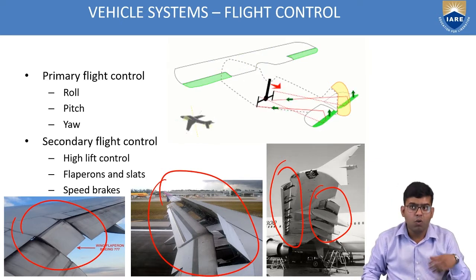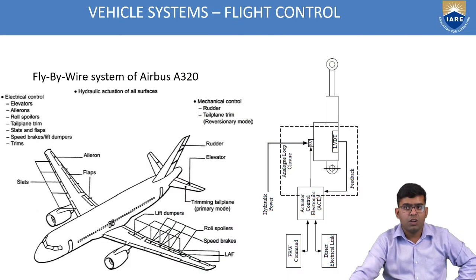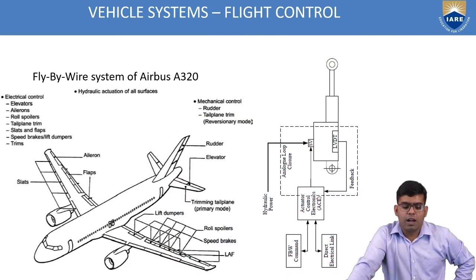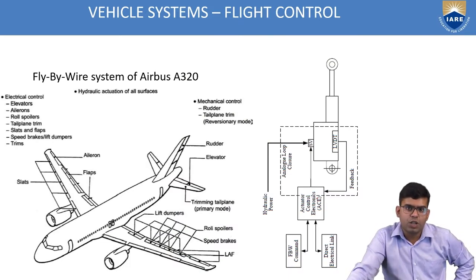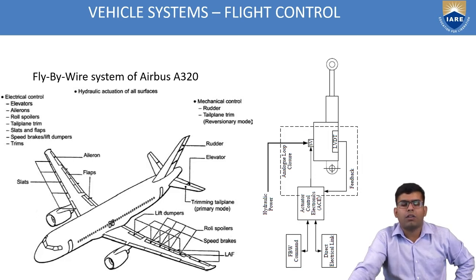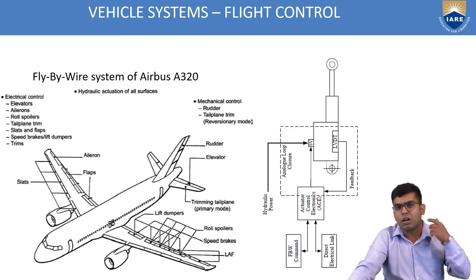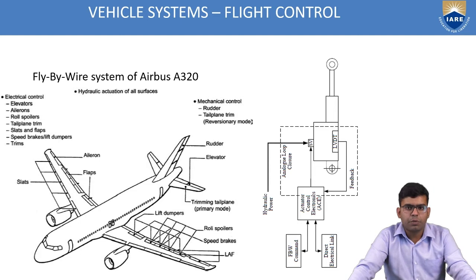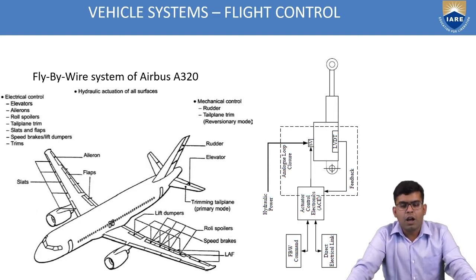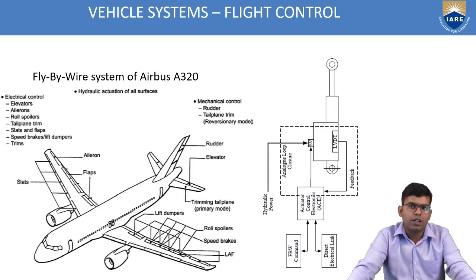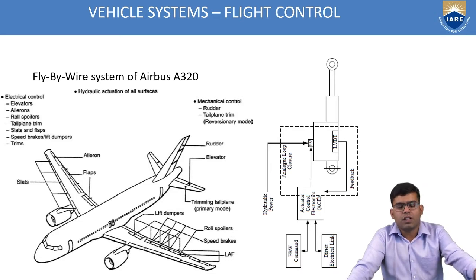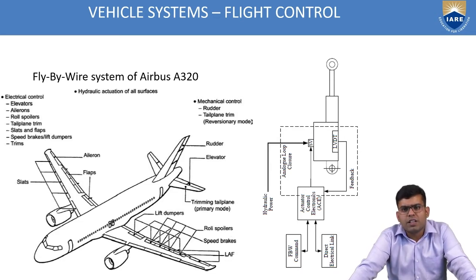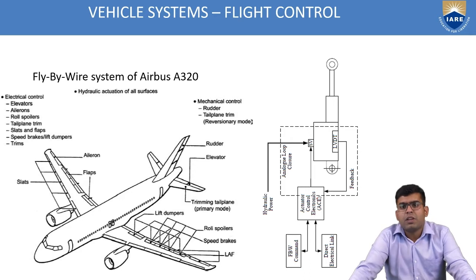How are these control surfaces controlled? Consider the Airbus A320. As mentioned in the last class, if you have taken IndiGo, GoAir, or Vistara Airlines for domestic flights in India, there is a 95% chance you have flown on an Airbus aircraft. Other than turboprop variants, most aircraft in Indian commercial aviation are the Airbus A320.